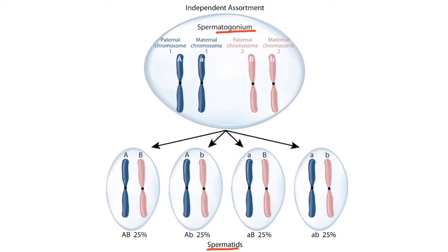In this figure, only two sets of homologous chromosomes are shown in the spermatogonium. Notice that there is a paternal version of chromosome 1 as well as a maternal version of chromosome 1. These are called homologous chromosomes. So in this figure, there are homologous chromosomes for chromosomes 1 and 2. In reality, there are 23 homologous chromosomes, but we've only shown 2 here for simplicity.